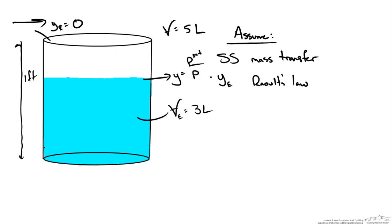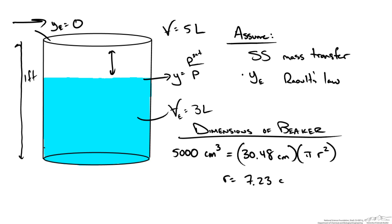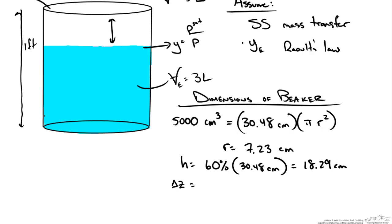We have a cylinder and we can determine the stagnant layer thickness from the beaker dimensions. The volume of 5,000 cubic centimeters with a height of 1 foot, which converts to 30.48 centimeters, gives us a radius of approximately 7.23 centimeters. Since 3 liters is 60% of the 5 liter total volume, the liquid height is 60% of 30.48 centimeters, which is 18.29 centimeters. This gives us a film thickness delta z of 12.19 centimeters from the liquid surface to the top of the beaker.